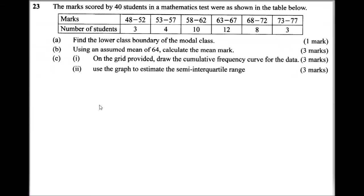Question number 23 is a statistics question. We are told the marks scored by 40 students in a mathematics test were as shown in the table below. So we have the marks classified like 48 to 52, 53 to 57, on and on to 73 to 77.